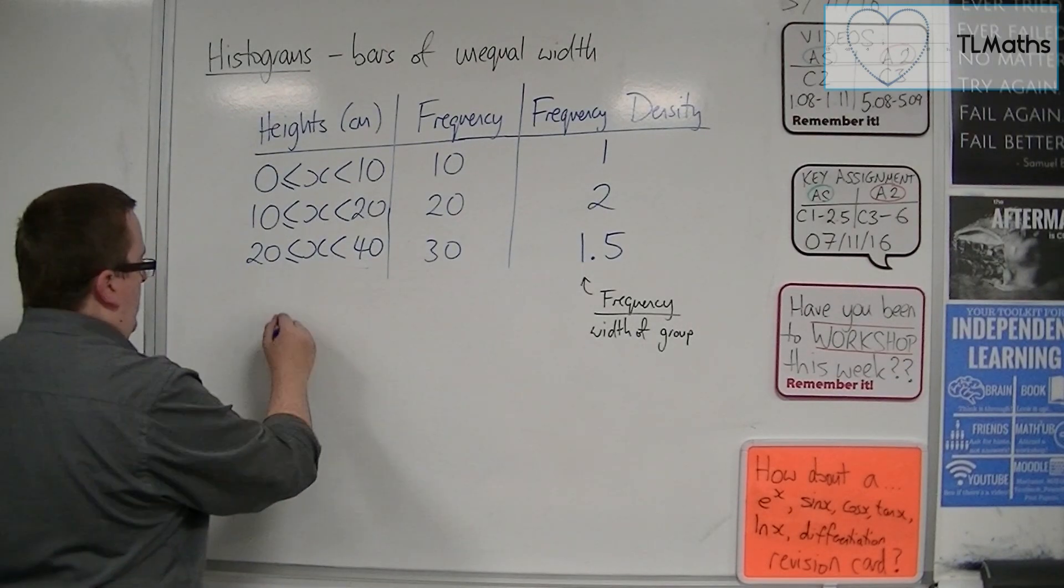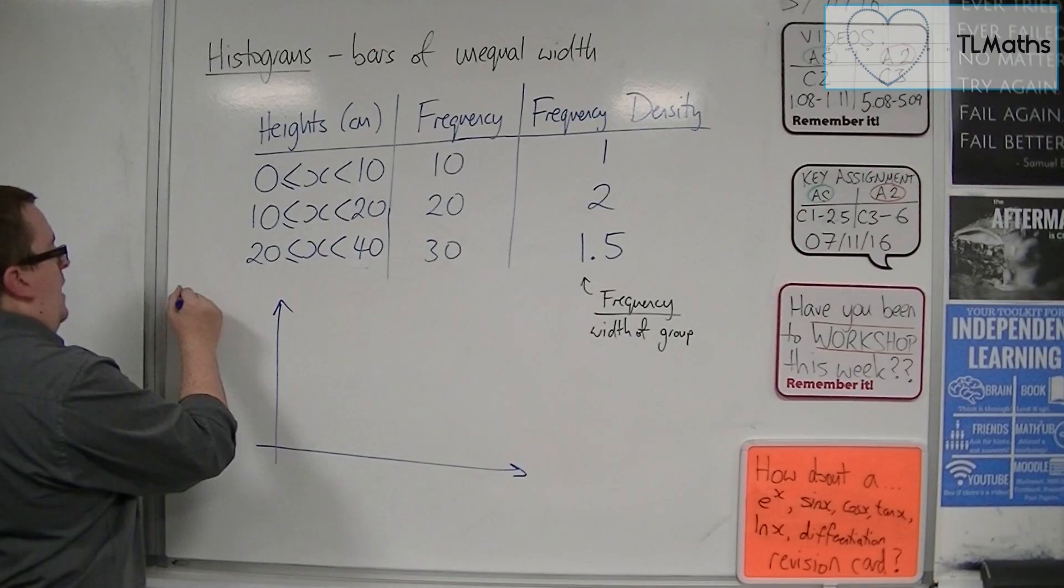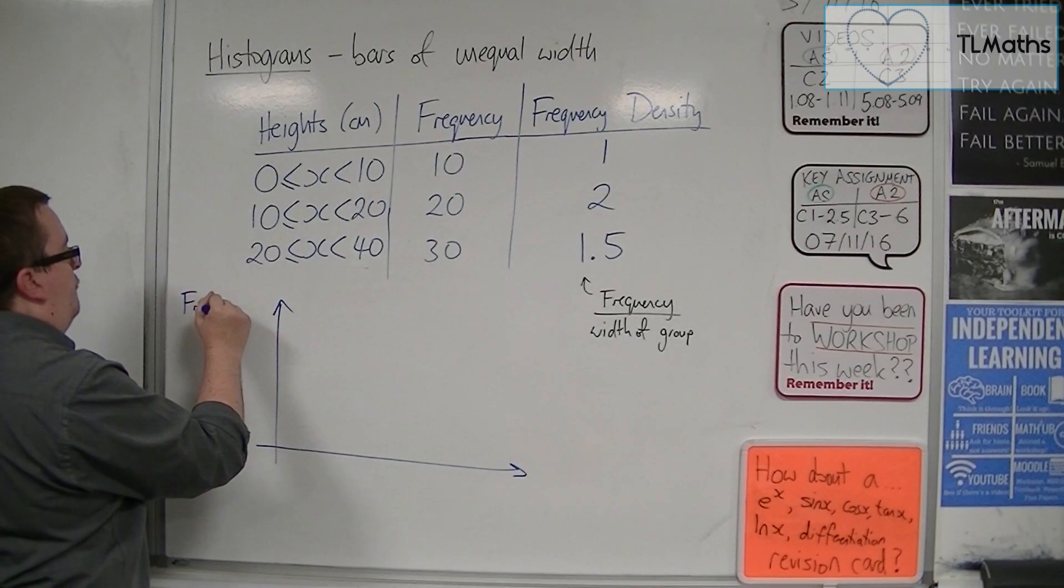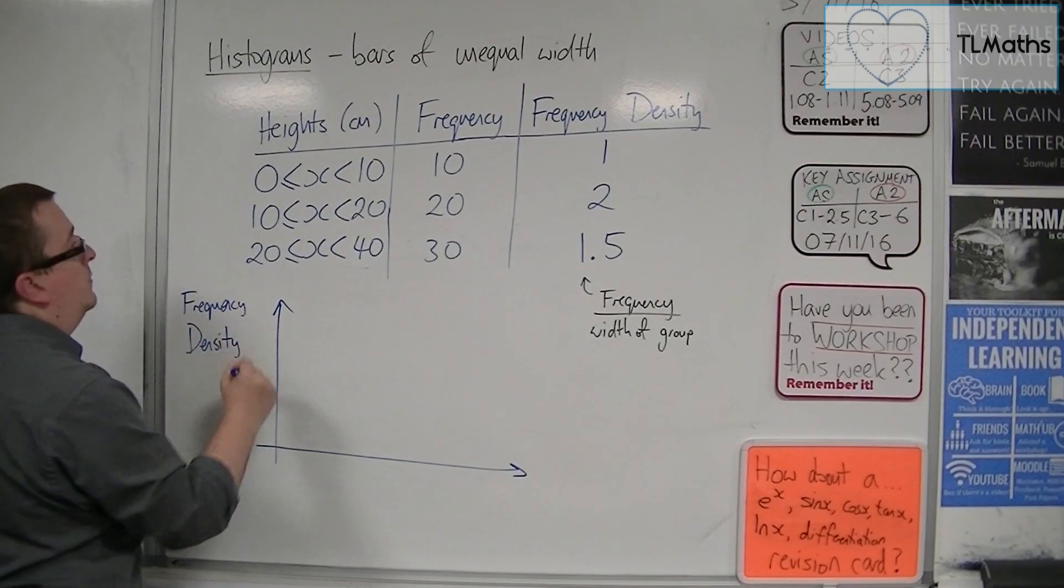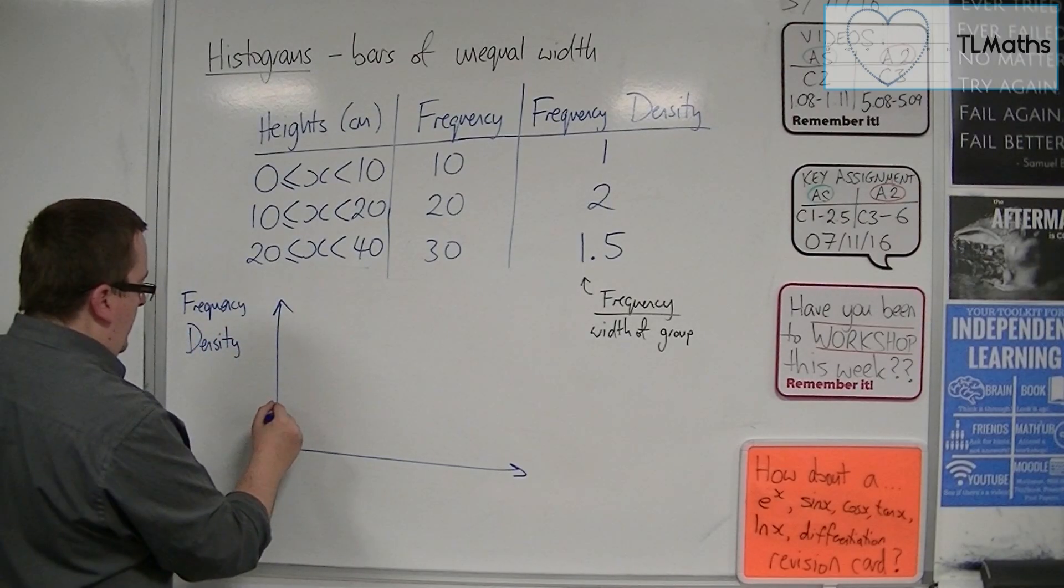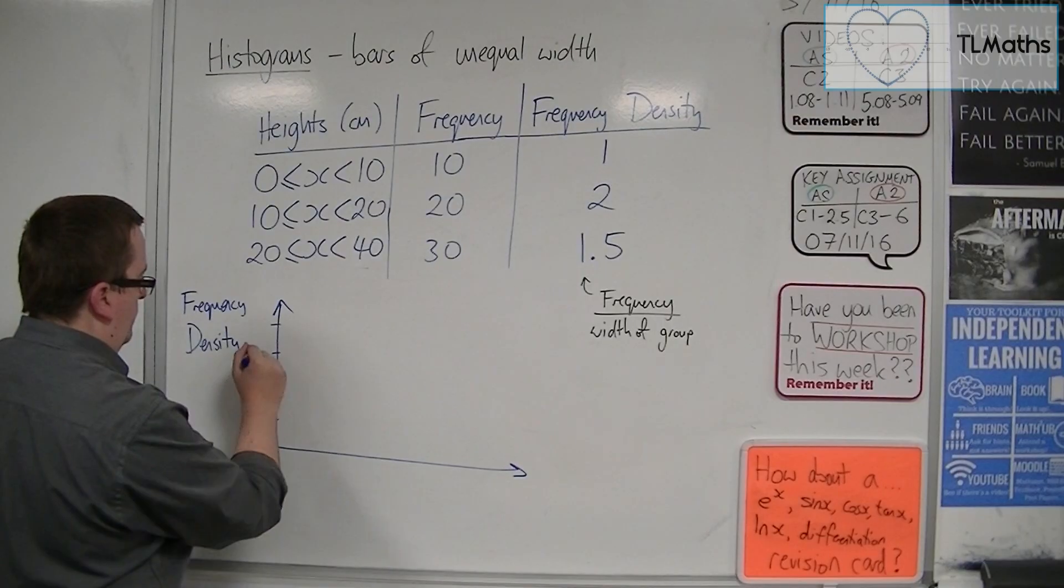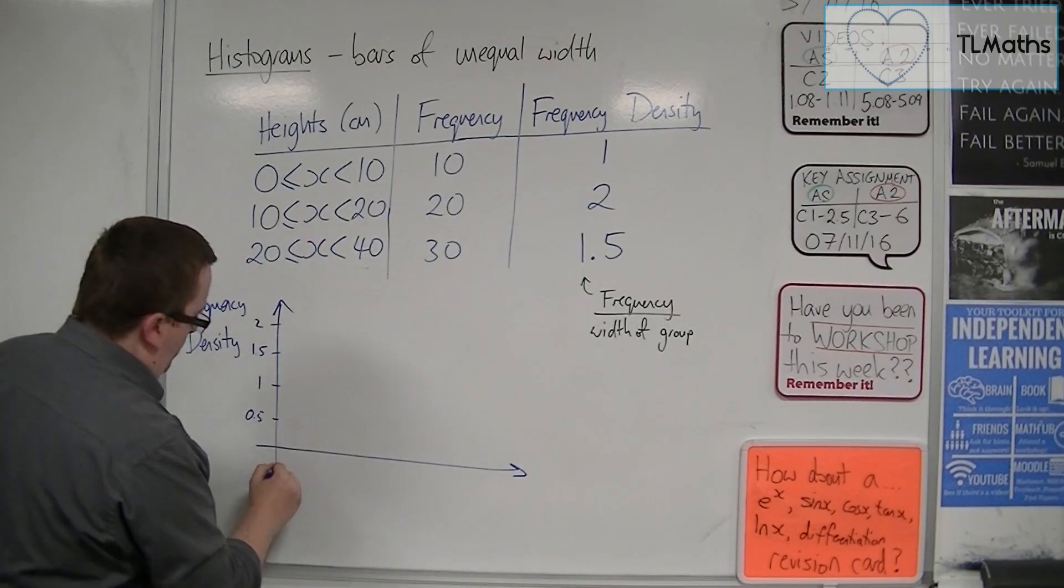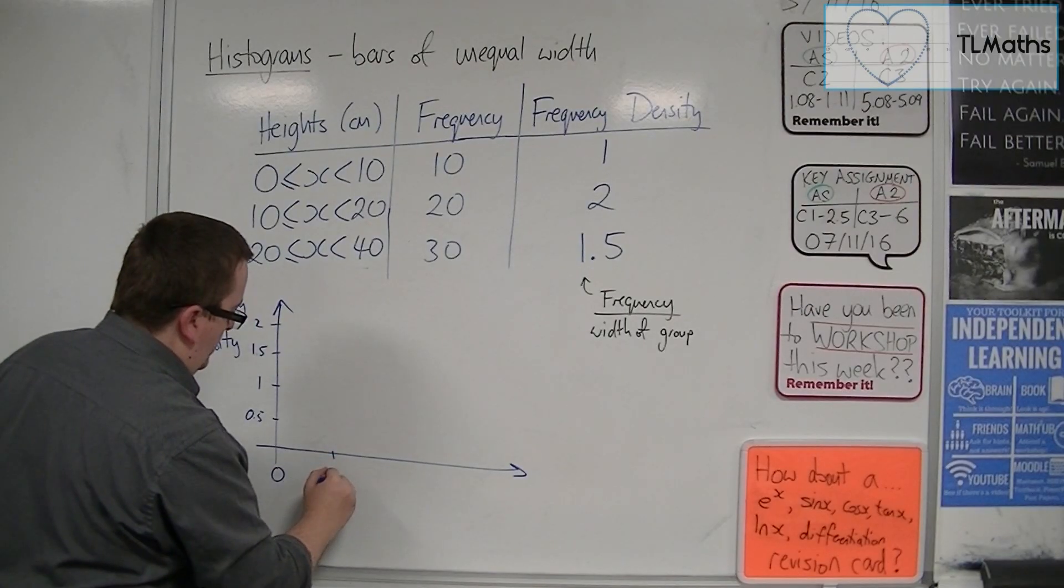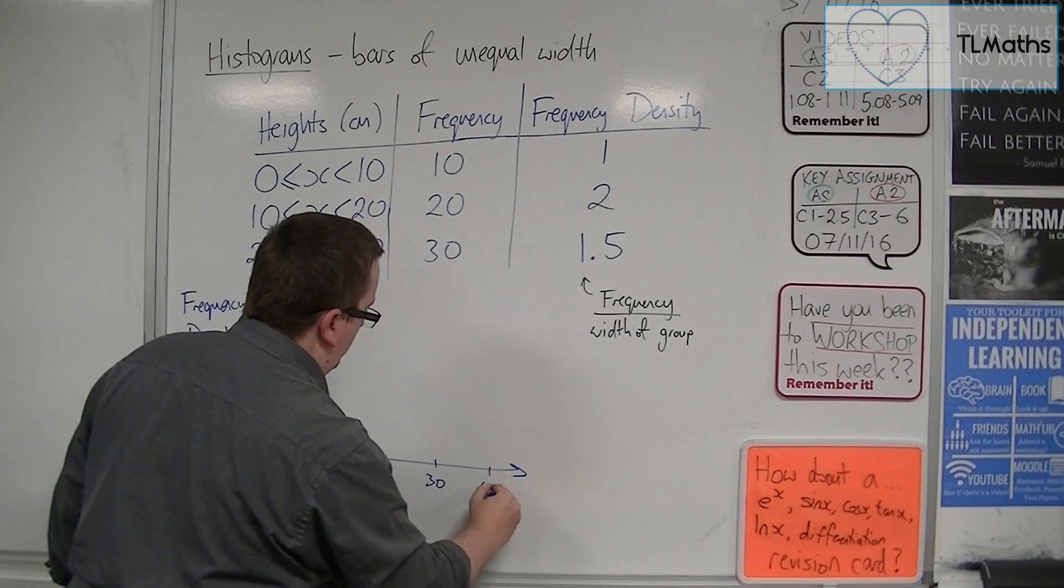So now, if I draw my histogram, up the left-hand side is the frequency density. And I'm going to have 0.5, 1, 1.5, 2. Along the bottom, I'm still going from 0 to 40. So 0, 10, 20, 30, 40.